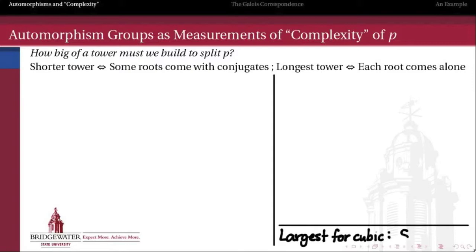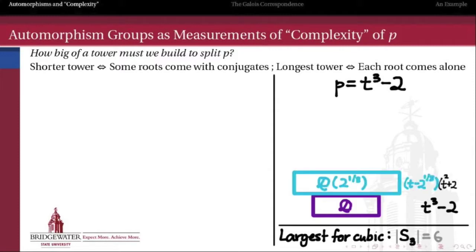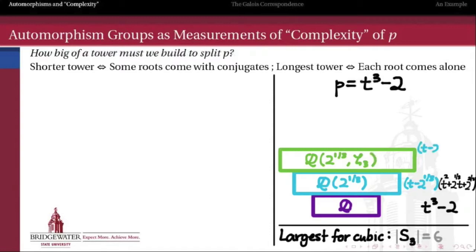In what sense does an automorphism group measure the complexity of a polynomial? How big of a tower do we have to build in order to split a polynomial — in other words, find all of its roots? If we have a long tower, it's because each of the roots that we locate is coming by itself, not bringing conjugate friends with it automatically. So for t cubed minus 2, we'll find out that this has the largest possible Galois group — the most number of automorphisms of its splitting field — among any cubic polynomial. If we start from the rationals, in which t cubed minus 2 has no roots because it's irreducible, and then we extend by the real cubed root of 2, what we get is a partial factorization.